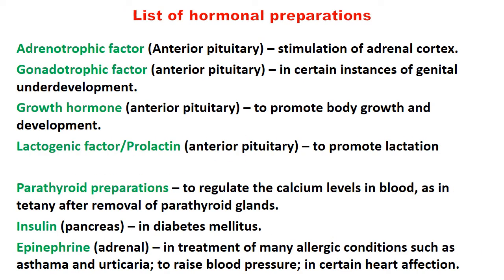A list of hormonal preparations from slaughterhouse glands: ACTH from anterior pituitary used for stimulation of adrenal cortex; gonadotropic factor from anterior pituitary used in certain instances of genital underdevelopment; growth hormone from anterior pituitary to promote body growth and development of bones; lactogenic factor or prolactin from anterior pituitary promotes lactation; parathyroid preparations to regulate calcium levels in blood as in tetany after removal of parathyroid glands; insulin from pancreas for diabetes mellitus; epinephrine from adrenal gland used in treatment of allergic conditions such as asthma, urticaria, to raise blood pressure, or in certain heart conditions.